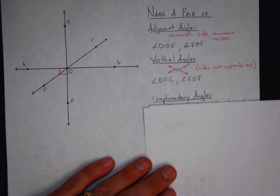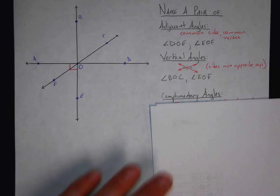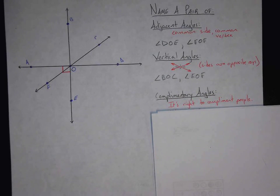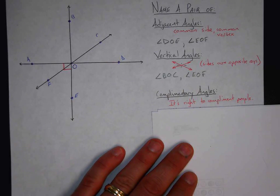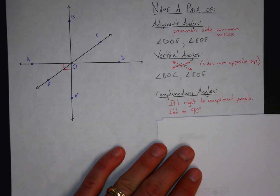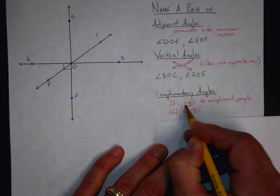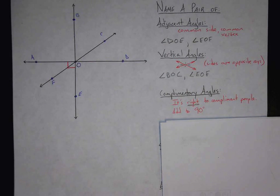Complementary angles — this is where things get confusing because you have to use some memories. The first thing I want you to know is that it's right to complement people; it's just the right thing to do. So what does it have to do with complementary angles? Well, if it's right to complement people, complementary angles add to 90 degrees, which is a right angle. So complementary angles add to 90 degrees. So if you look here, we have actually two pairs of complementary angles.